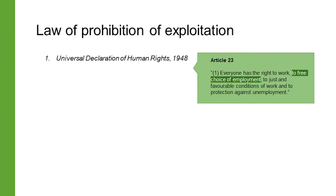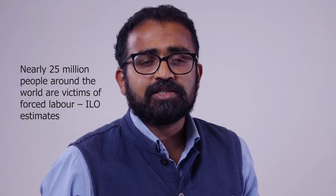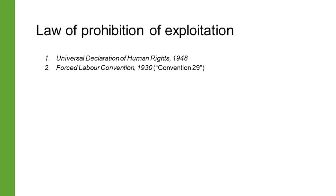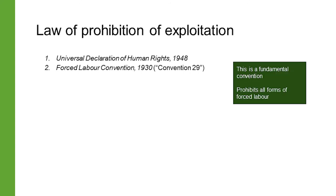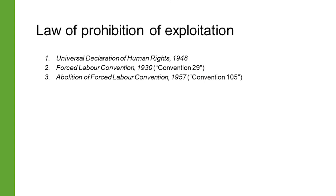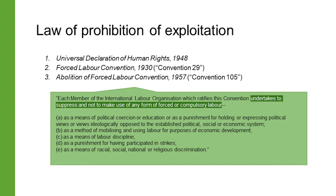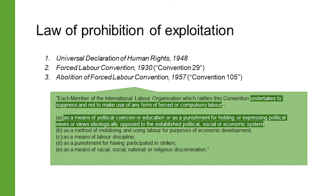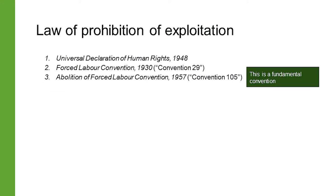Article 23 Clause 1 of the UDHR gives everyone the right to free choice of employment. Although forced labour is universally condemned, the ILO estimates that many millions around the world are still subject to it, with the majority exploited in the private economy. The Forced Labour Convention is a fundamental convention that prohibits all forms of forced or compulsory labour, defined as all work or service which is exacted from any person under the menace of any penalty and for which the said person has not offered himself voluntarily. The Abolition of Forced Labour Convention of 1957, another fundamental convention, prohibits forced or compulsory labour as a means of political coercion or education, or as a punishment for holding or expressing political views or views ideologically opposed to the established political, social, or economic system. India has ratified both of these fundamental conventions.